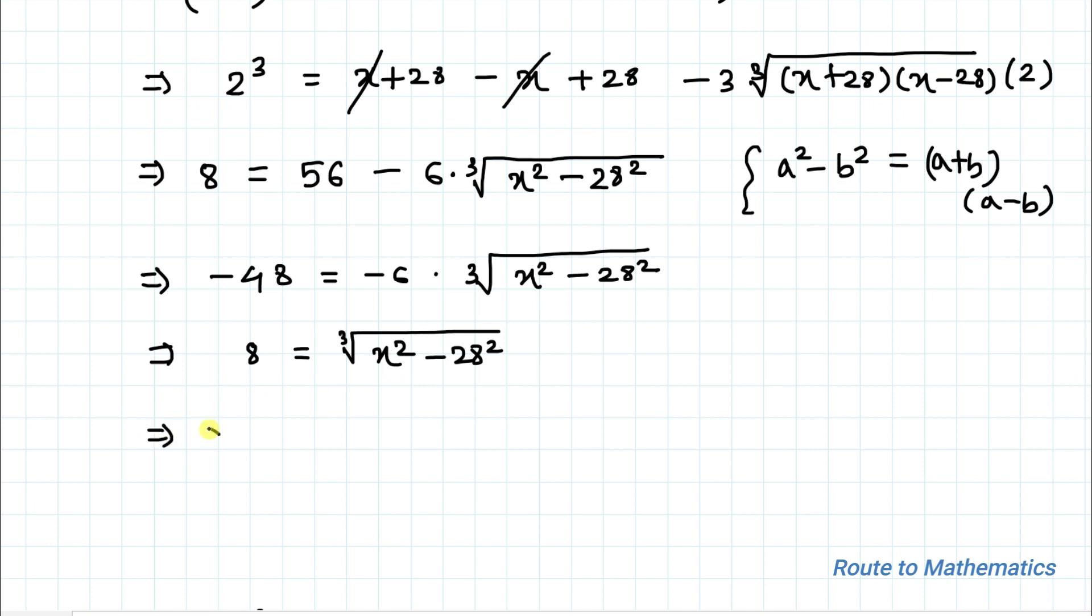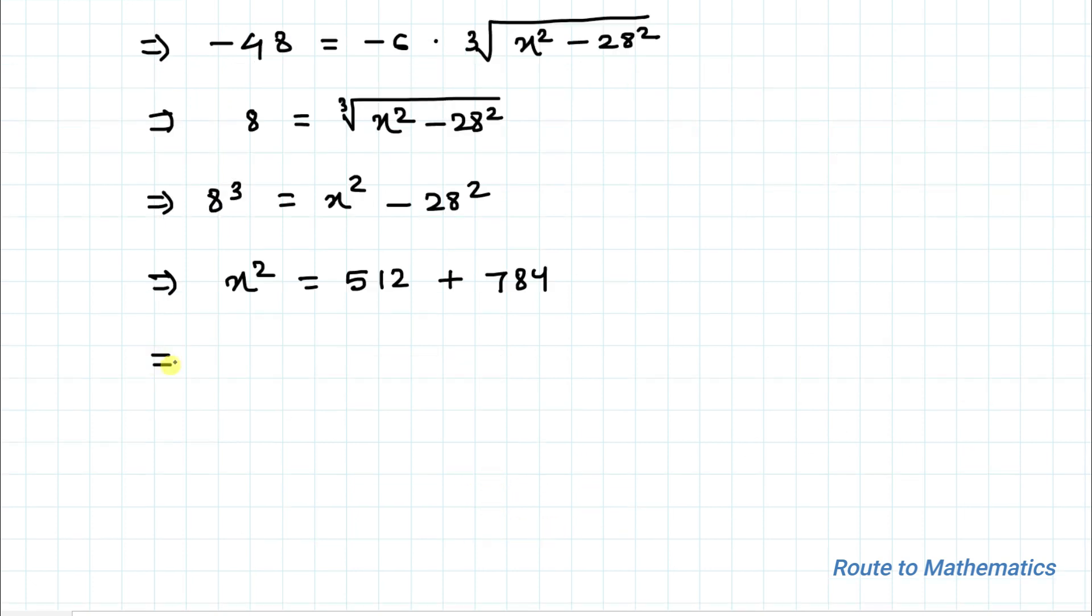Now cubing both sides of equation we have 8 cube equals x square minus 28 square, which implies x square equals 8 cube is 512 plus 28 square is 784. This implies x square equals 1296.